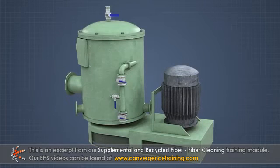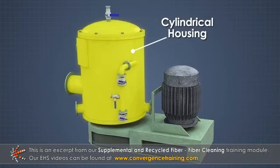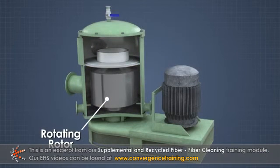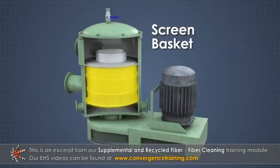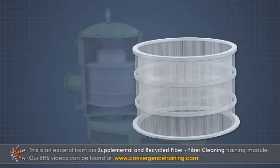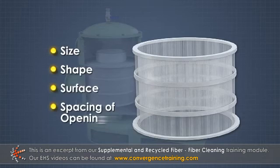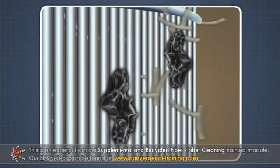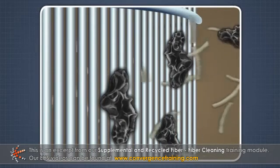Cylindrical screens consist of a cylindrical housing, a perforated screen basket inside the housing, and a motor-driven rotating rotor positioned either inside or outside the screen basket. The screen basket is a stationary cylindrical sieve that can be characterized by the size, shape, surface, and spacing of its openings. The fibers must pass through the holes or slot openings in the basket walls in order to be accepted, so the characteristics of these openings greatly influence the performance of a screen.